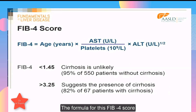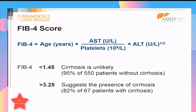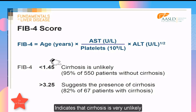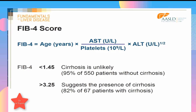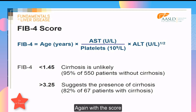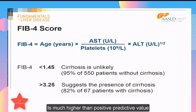The formula for the FIB-4 score is given in this slide. A FIB-4 score less than 1.45 indicates that cirrhosis is very unlikely, whereas a FIB-4 score of 3.25 or greater suggests the presence of cirrhosis. Again, with this score, negative predictive value is much higher than positive predictive value.